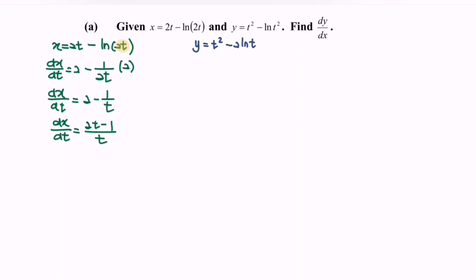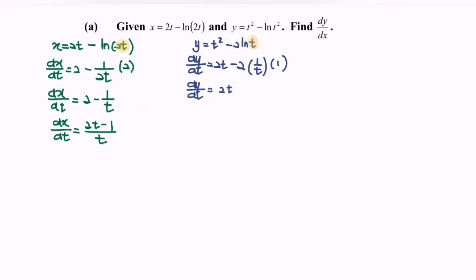Now focus on y. We have dy/dt equals to 2t minus 2 times the derivative of ln(t). Differentiating ln(t) gives 1 over t, and remembering the internal function gives 1. Rewriting, dy/dt equals to 2t minus 2 over t. Equating the denominator, we get (2t squared minus 2) over t.